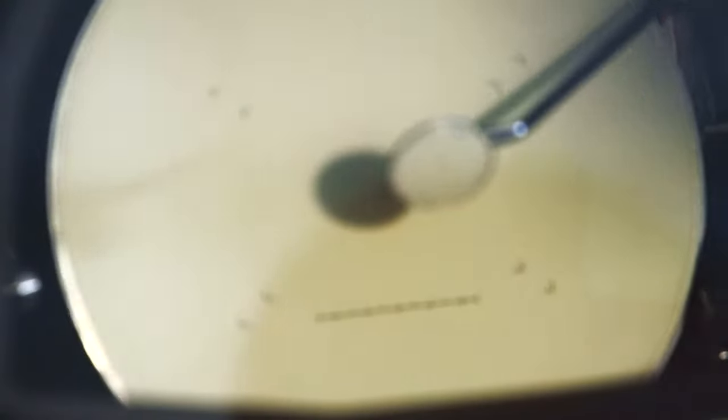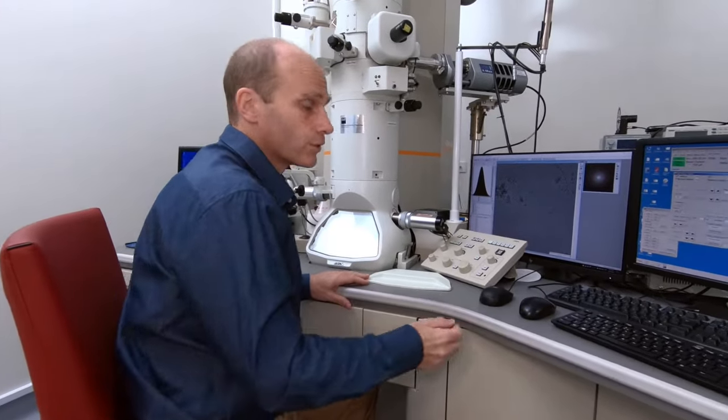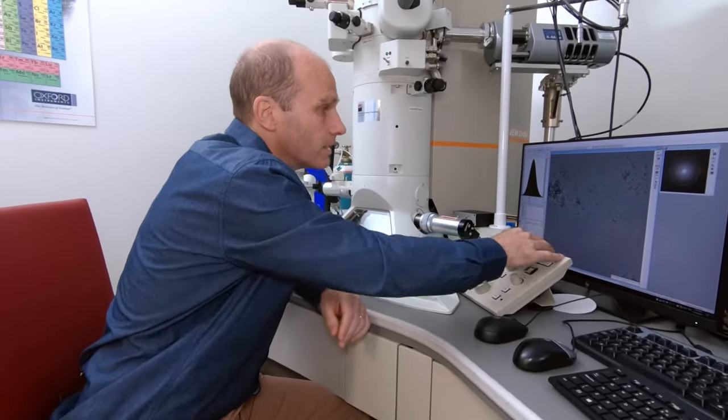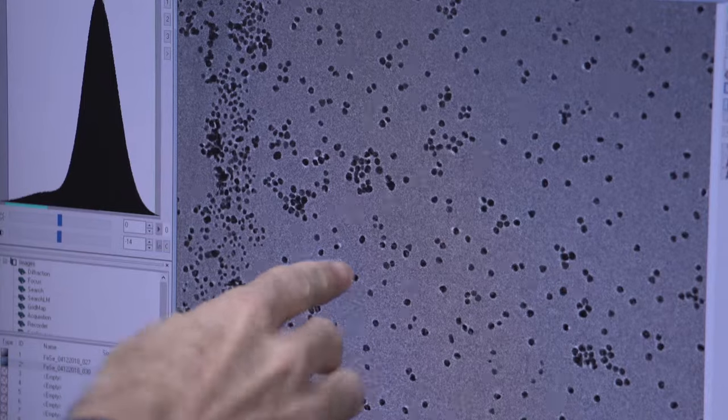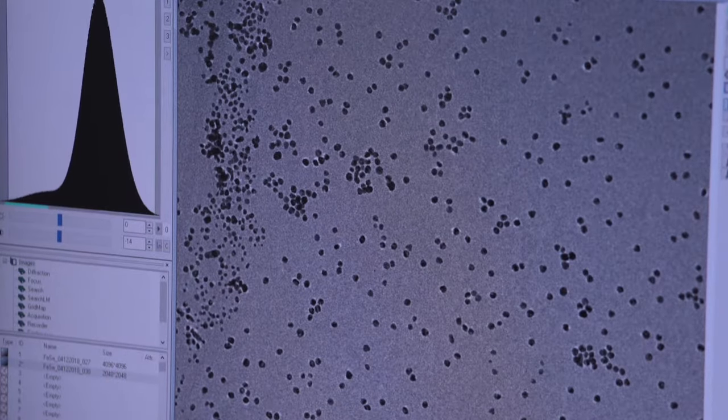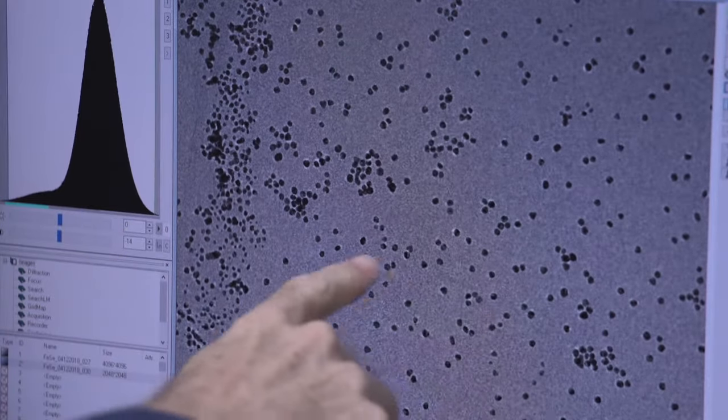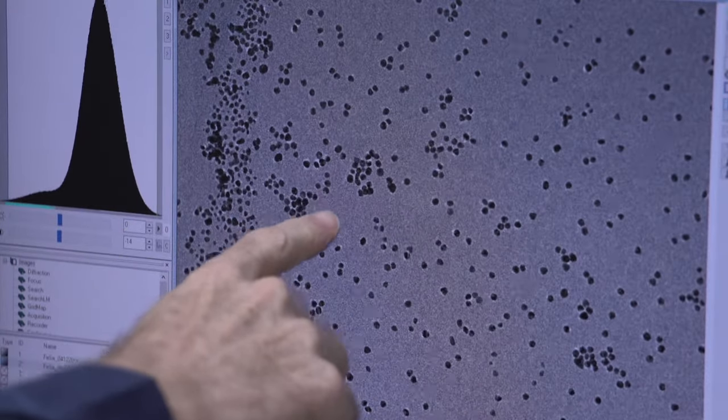So we've got our sample in the microscope and we have a beam of electrons. We can now see the image on the CCD camera. If you have a look over here, we've already started a live recording. And you can see these black dots on a sort of pale background. So these are the gold nanoparticles that have been synthesized. And the size of these is going to be very small. It will probably be on the order of 5 to 10 nanometers.